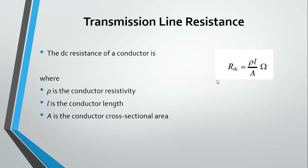Due to the skin effect, the area we calculate in DC is not the same as the effective area in AC. There are different formulas available to measure the effective area in AC circuits. The resistance of AC is different compared to DC resistance. However, the simpler formula R = ρL/A is normally used for low frequency and low voltage ratings.